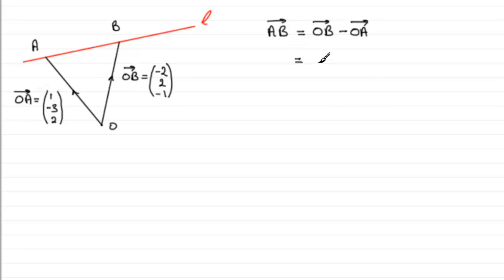So you just need to subtract our vectors. So we've got minus 2 minus the 1 here, which is going to be minus 3. And then 2 minus minus 3, which is 5. And then minus 1 minus the 2 is minus 3. So A to B then is minus 3, 5, minus 3.